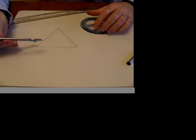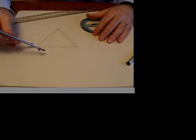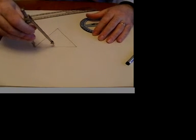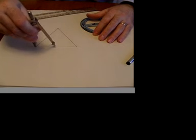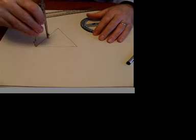So take a compass, open it up. In this case it doesn't matter the size of it, but put the point on the vertex of the triangle and draw an arc on one edge and on the other edge.